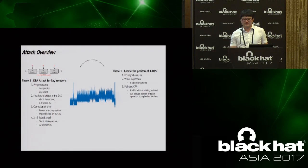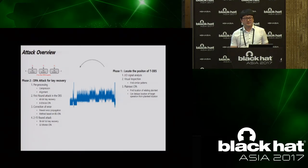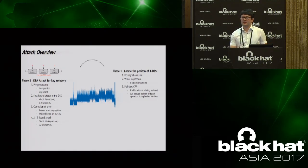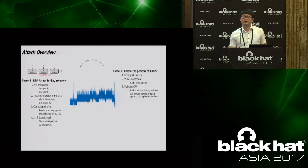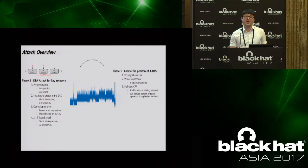Once the location is determined, we perform DPA to search for the key. Since two-key triple-DES is our target, we need to find two 56-bit single-DES keys. Generally, attacking the first round recovers 48-bit of the key, and using the recovered result, attacking the second round recovers the whole key. Most importantly, we don't know what the key is, so we don't know whether each DPA result is correct. Thus, we perform error correction after DPA for success rate and to prevent error propagation.